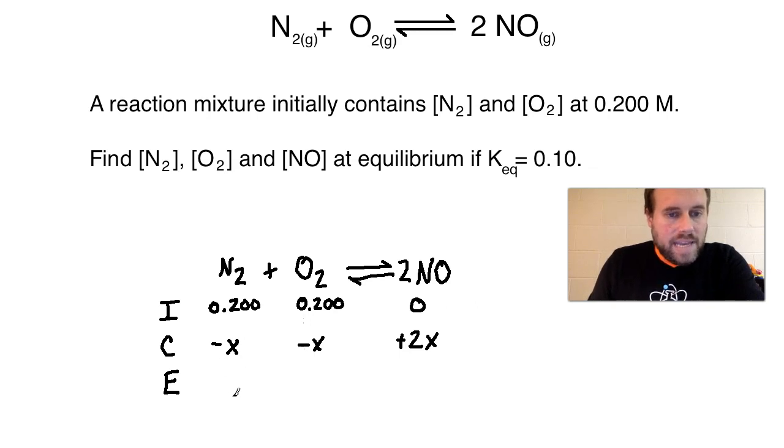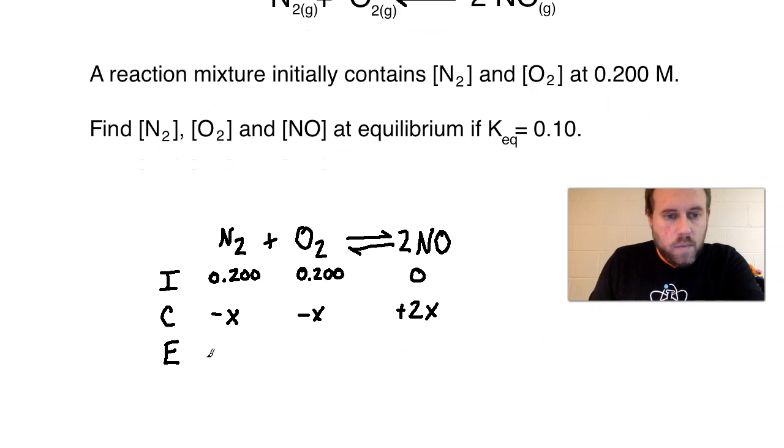So then at equilibrium, I can express these terms with X involved and I can say, well, I know I started with 0.200 molarity and I lost some amount X. So at equilibrium, I would expect that the concentration will be 0.200 minus X. And it would be the same thing for the oxygen. So it's going to be 0.200 minus X. And then this would be 0 plus 2X, so it would just be 2X. So now I have all of my equilibrium concentrations expressed in terms of X. I now need to go in and solve for X itself. Because once I have X, I can plug it back into this equilibrium line, the E in the ICE chart, and I can find the actual molarities and concentration.